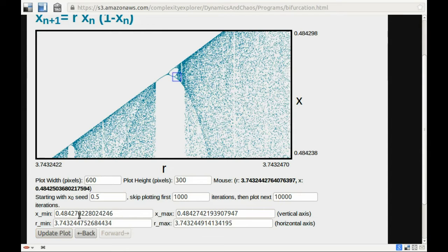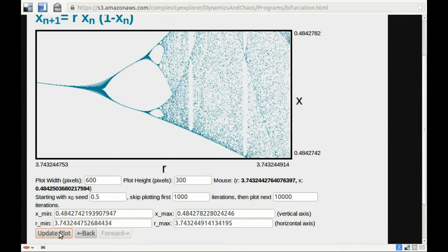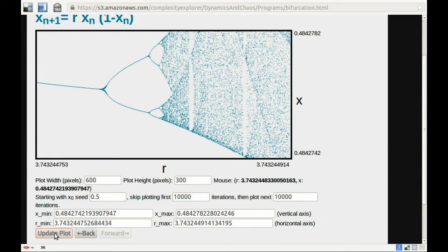Let's zoom in there. Again, I'm starting to see some smearing out, so I'm going to now skip 10,000 before I start plotting, and that crisps things up again.